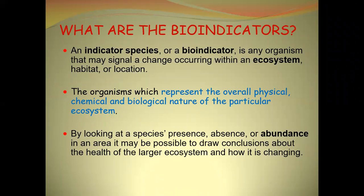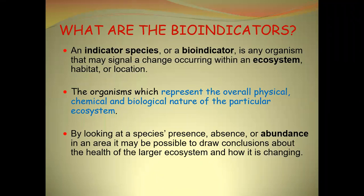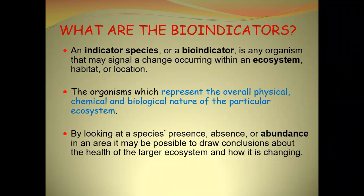The organism which represents the overall physical, chemical, and biological nature of a particular ecosystem is called a bioindicator. By looking at a species — their presence, absence, or abundance in an area — it may be possible to draw a conclusion about the health of the larger ecosystem and how it is changing. Any change in an ecosystem determined by the presence or absence of any organism is called a bioindicator or indicator species.